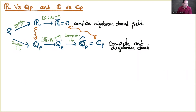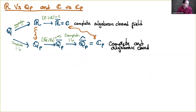Yesterday someone asked: what if we start with ℚ, take the algebraic closure Q̄, and then complete it? The answer is that we get ℂ_p once again. The argument is that if we take a finite extension of ℚ (a number field) and complete it using a place above a prime p, we get a finite extension of ℚ_p.